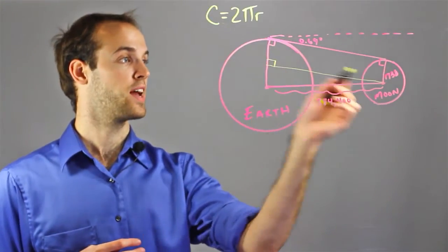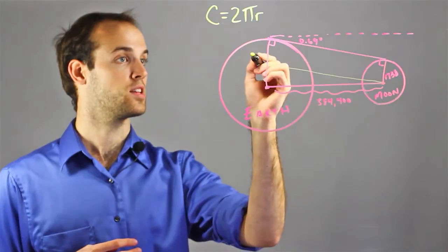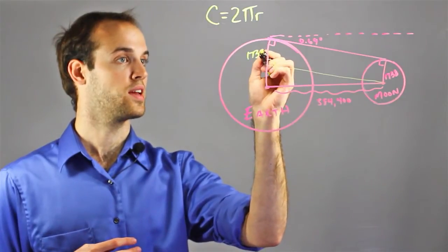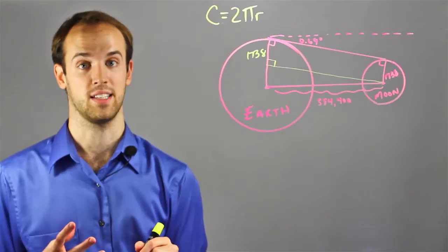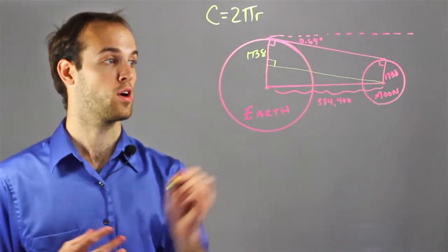And I know that this part of the rectangle must be the same as the Moon's radius, which is 1738. So I have part of the Earth's radius. Now I need to find this part right here.